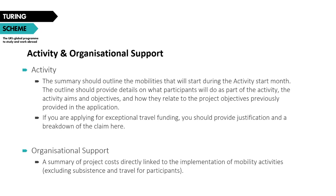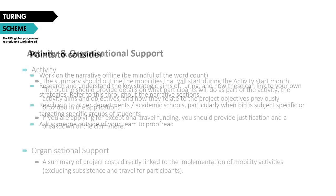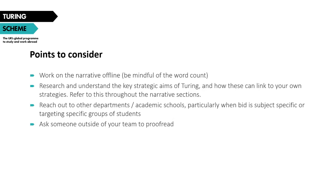There are also two additional narrative sections — under activity and organisational support. For each activity, you need to write a narrative for each month where the activity starts. The answers for activities are assessed as part of the value for money criteria, so provide a strong rationale for your requested budget. If you have multiple activities it's okay to use bullet points or to refer back to where you've already detailed that activity in a previous section — just be clear which section you're referring to so the assessor can follow your logic. For organisational support, write a narrative about your proposed costs for that budget.